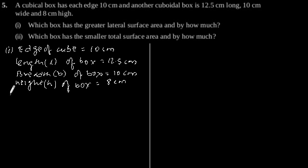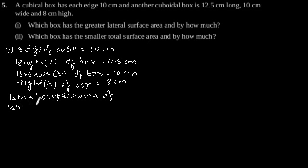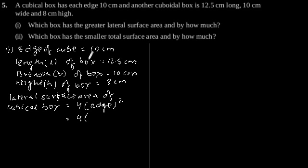So, lateral surface area of the cubical box is equal to 4 into h squared. Since the edge of the cube is 10 cm, this gives 4 into 100, which is equal to 400 cm squared.